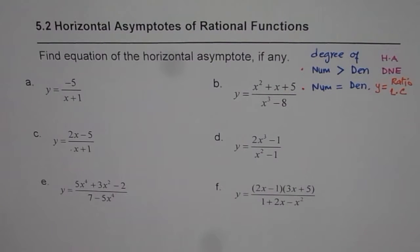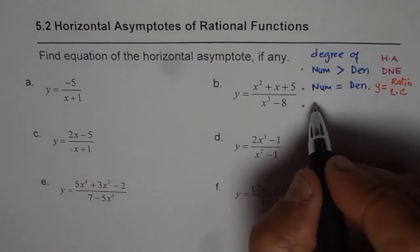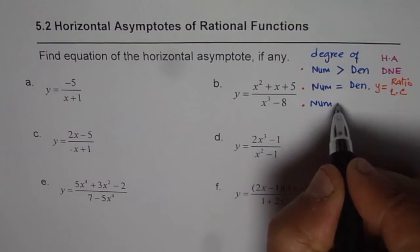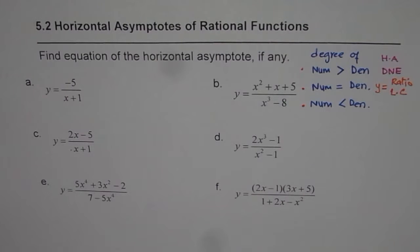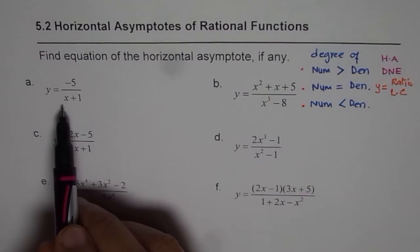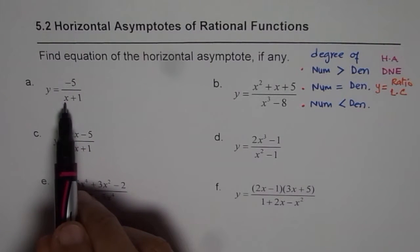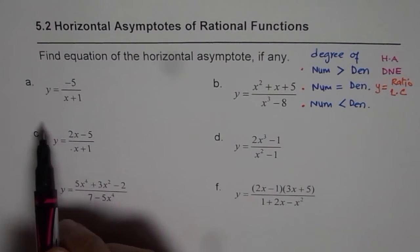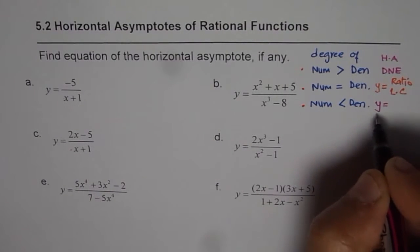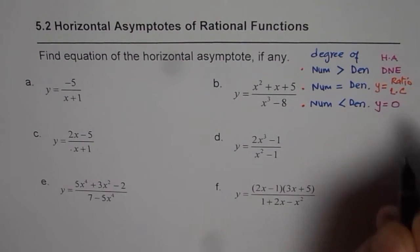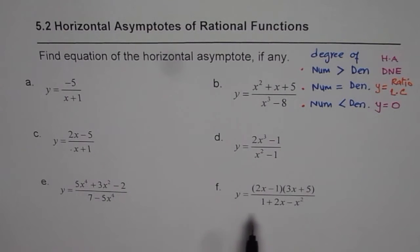The third case is when the degree of the numerator is less than the degree of the denominator. In this case the numerator degree is 0 — it's a constant — and the denominator degree is 1, so the degree of the denominator is higher. In this case a horizontal asymptote always exists and the equation will be y equals 0. We will use this rule to write down equations for each example.